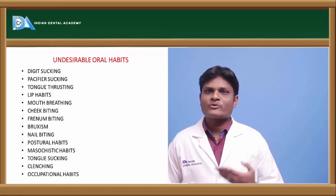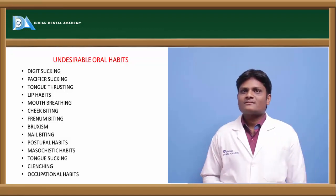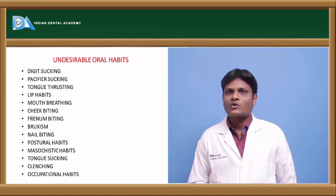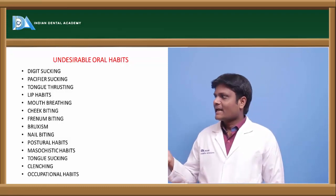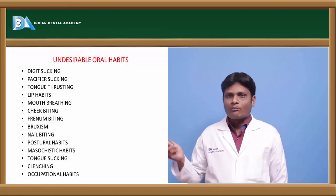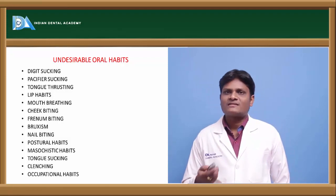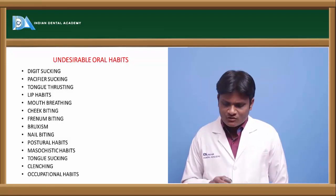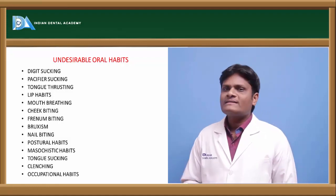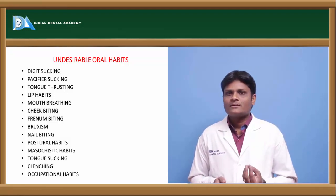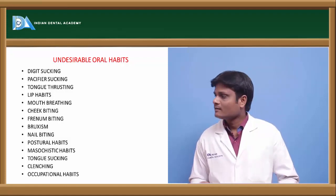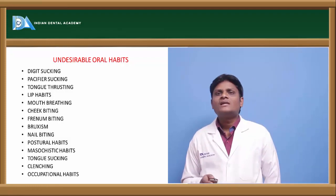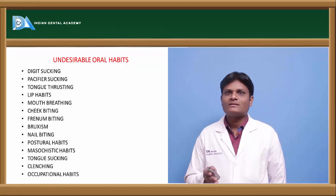The various abnormal oral habits seen in an individual include digit sucking, thumb sucking or finger sucking, pacifier sucking, tongue thrusting, lip biting, mouth breathing, cheek biting, frenum biting, bruxism, nail biting, masochistic or self-trauma inflicting habits, tongue sucking, clenching, and occupational habits. Of all these, the major habits with significant influence on orofacial structures are digit sucking, tongue thrusting, mouth breathing, and bruxism.